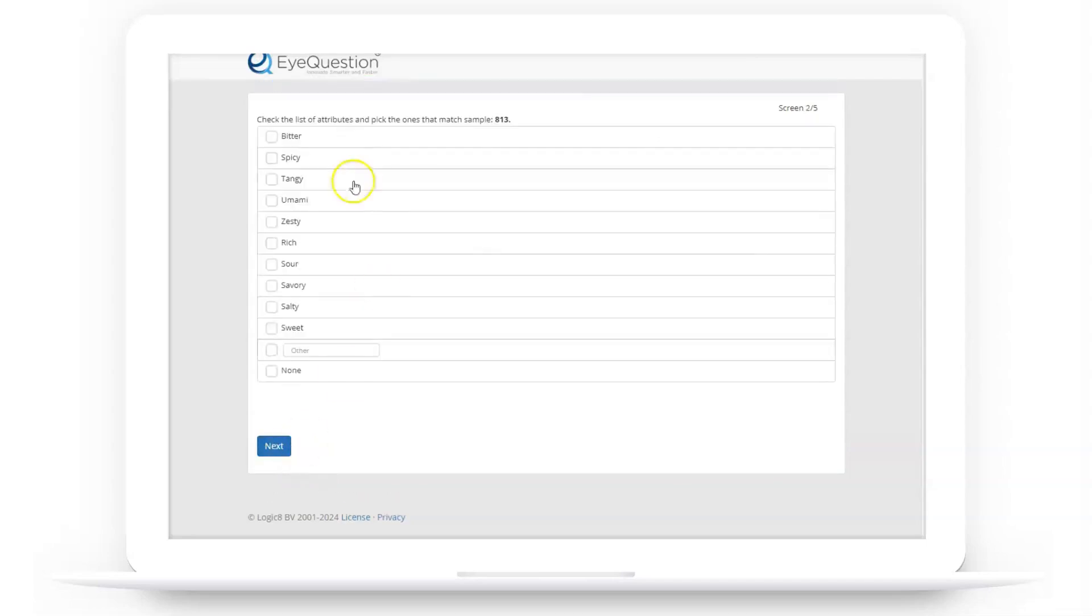The questionnaire includes instructions and the appropriate question for panelists to select all attributes that apply to each product. iQuestion automatically arranges the samples in a different sequence for each participant.